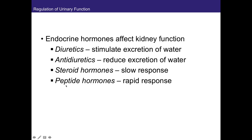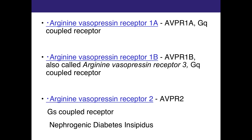There are four extrinsic mechanisms: vasopressin, aldosterone, the renin-angiotensin system, and atrial natriuretic peptide. The first three are all antidiuretics. The last one — atrial natriuretic peptide — is the only diuretic of the bunch. That was the scuba diving example: it makes you pee once you start to dive.